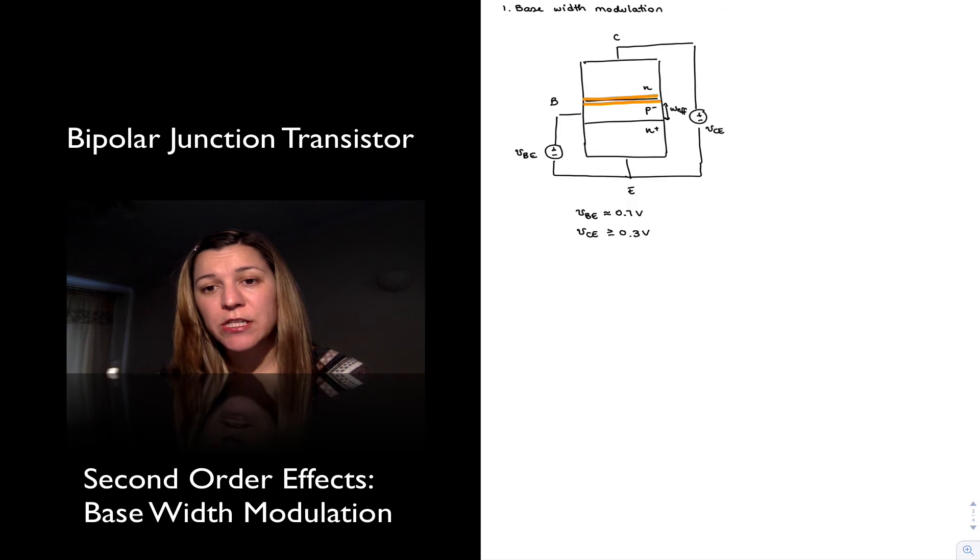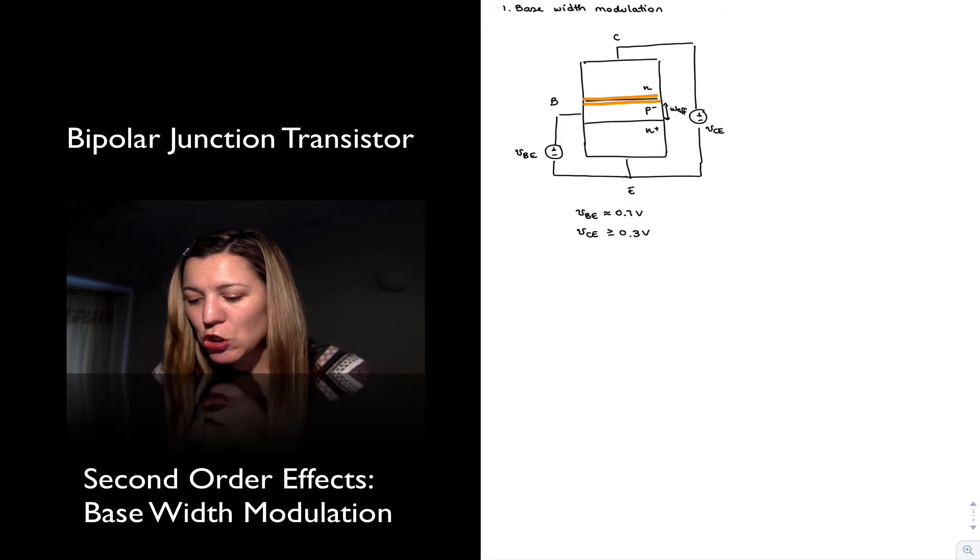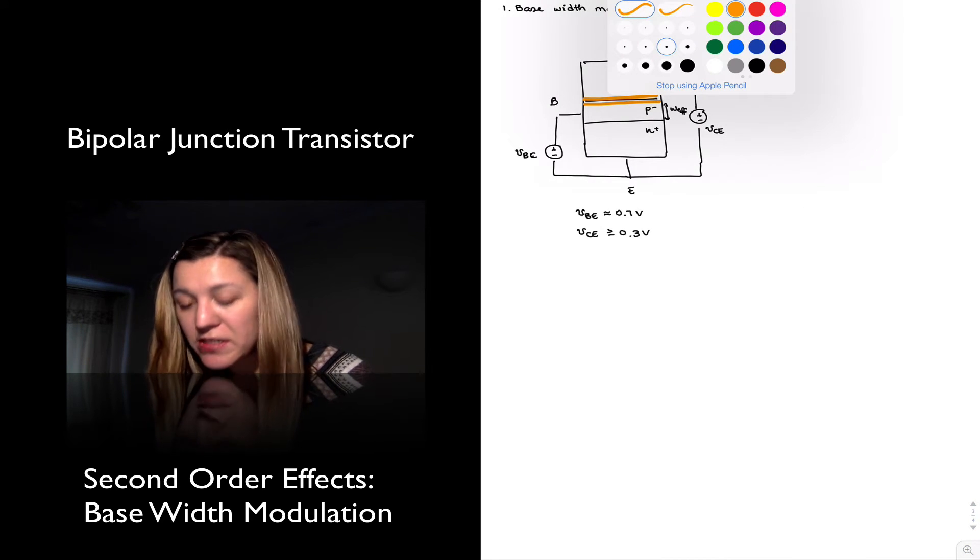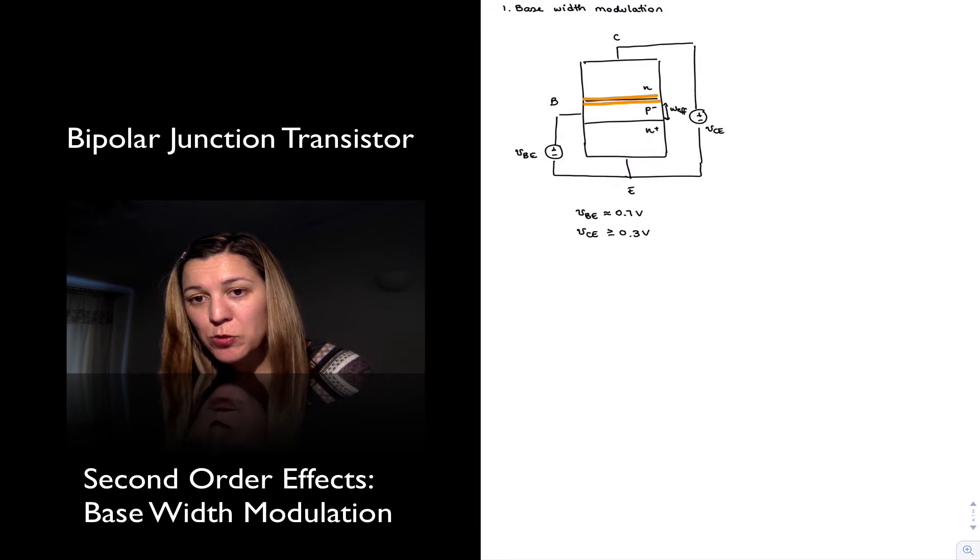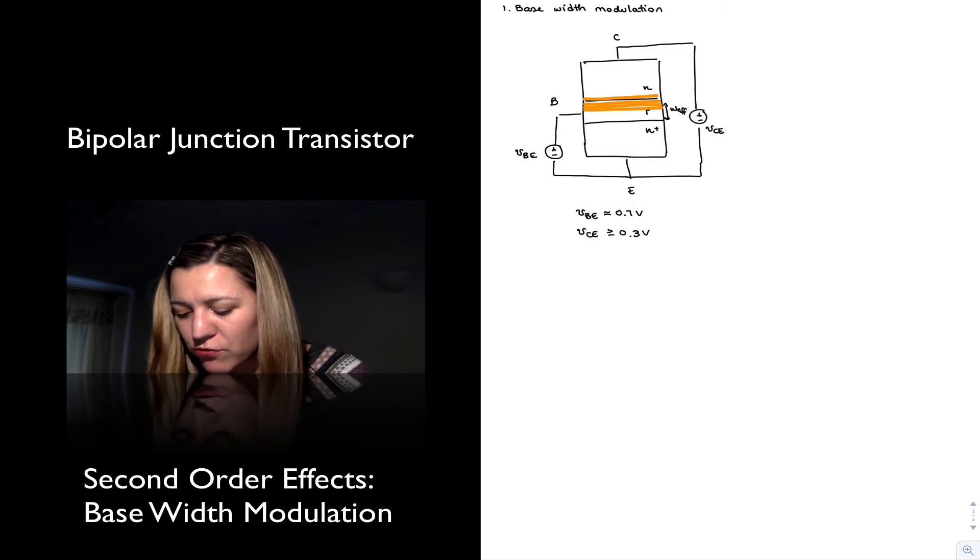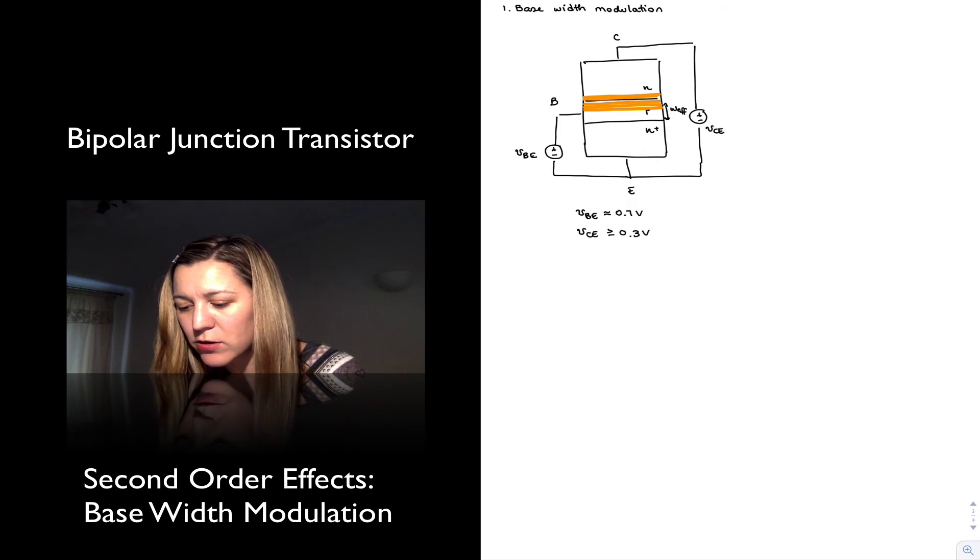Now, as I increase my VCE voltage, that depletion region extends further into both the collector and the base. But in the case of the base, because the base is lightly doped, it's going to extend even further than into the collector for the same amount of increase in VCE. The reason for that is because it needs to extend further physically in order to uncover the same amount of charge. And so what we will have, if I may represent it like this, as VCE increases, is a higher reverse bias voltage across the junction is going to give us a depletion region that extends farther into both the base and the collector. Like I said, it's going to be typically farther into the base for the same voltage.